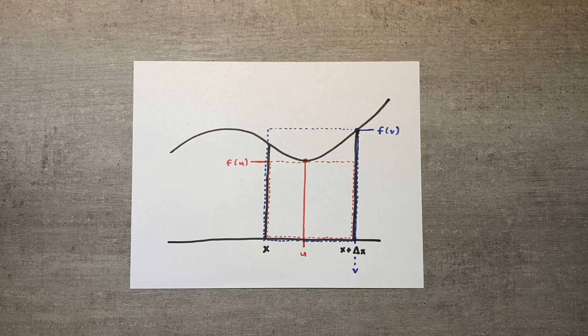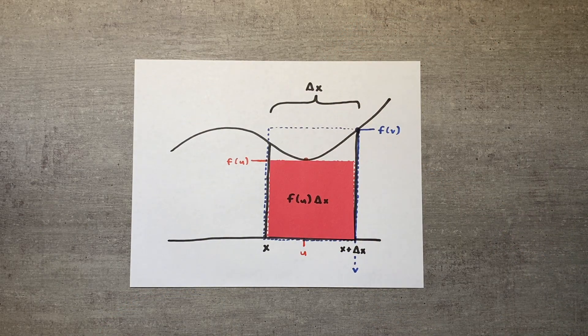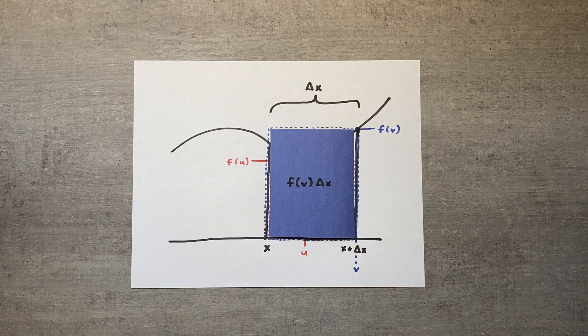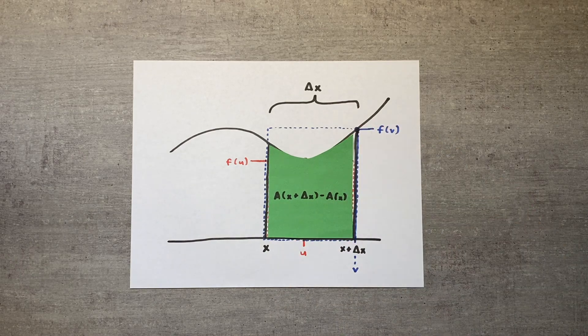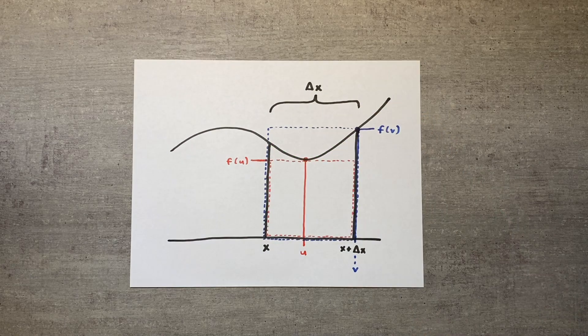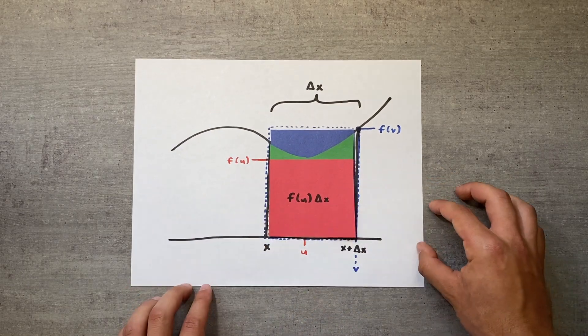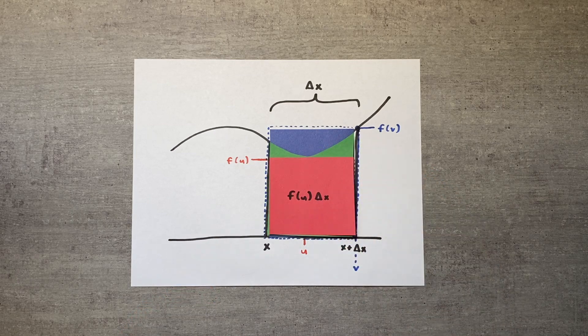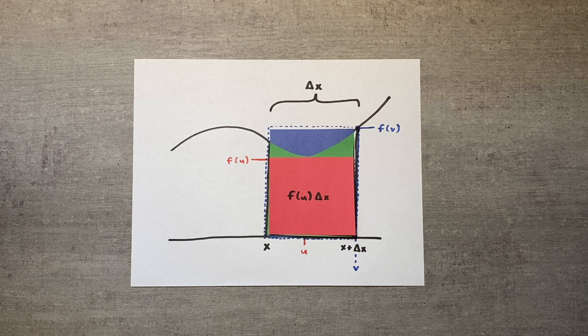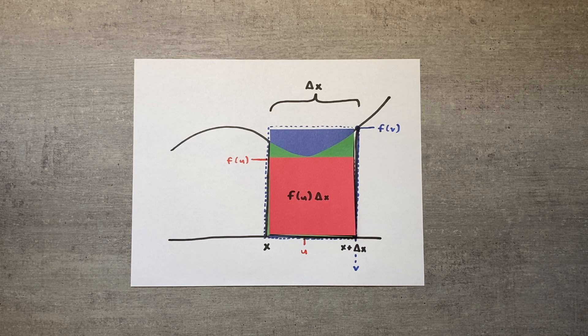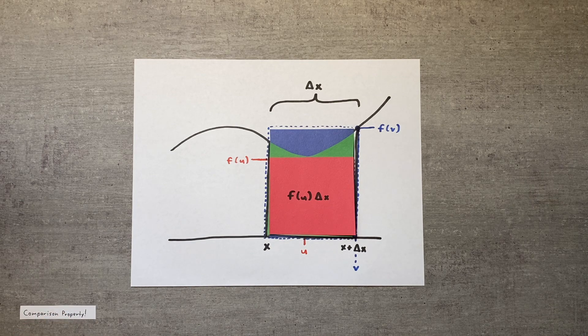There are now three ways to describe the difference in area, two approximate and one exact. The minimum height rectangle has an area of f of u times delta x, and the maximum height rectangle has an area of f of v times delta x. We can describe the exact difference in area the same way we did for proof 2, as a of x plus delta x minus a of x. The reason we created these rectangles is because they give us an upper and lower bound for the actual difference in area. f of u is always less than or equal to the curve f, as long as we're between x and x plus delta x. Likewise, f of v is always greater than or equal to f. Because of this, the actual area underneath f between x and x plus delta x has to be between the areas of these two rectangles, due to the comparison property of integrals.